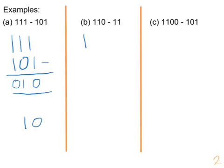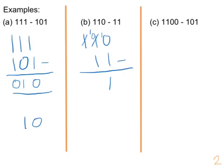For the next one, we have 1 1 0 take away 1 1. Zero take away one — we can't do that — so let's move from that column into this one, giving us two of them take away one, leaving us with one. The next column: we've now got zero take away one, we can't do that, so let's take one from the next column — giving us two of them take away one, leaving us with one. In the final column, because we used it already, there's nothing left, so our final answer is 0 1 1.